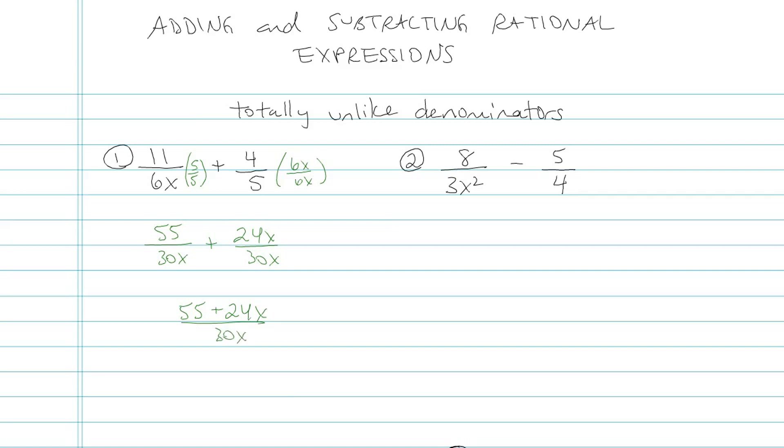Then what I would do is see if there's any common factors, anything on top that I could factor out and maybe cancel with the bottom, but there isn't. So in fact, that's it. Number 1 is done. Let's look at number 2.